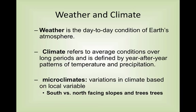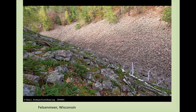Microclimates are variations in a climate based on some local variable. One of the ones that we talk about most with microclimates is south versus north-facing slopes. In the northern hemisphere, the sun will always be in our southern sky, which means if you're a south-facing slope, you constantly have the sun on you, and if you're a north-facing slope, you don't have the sun on you.